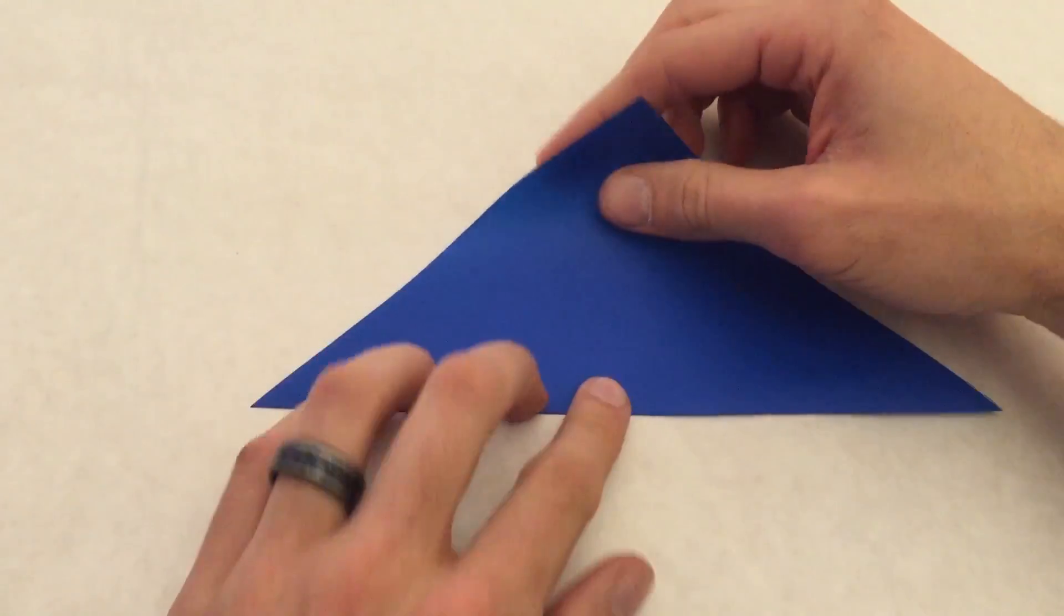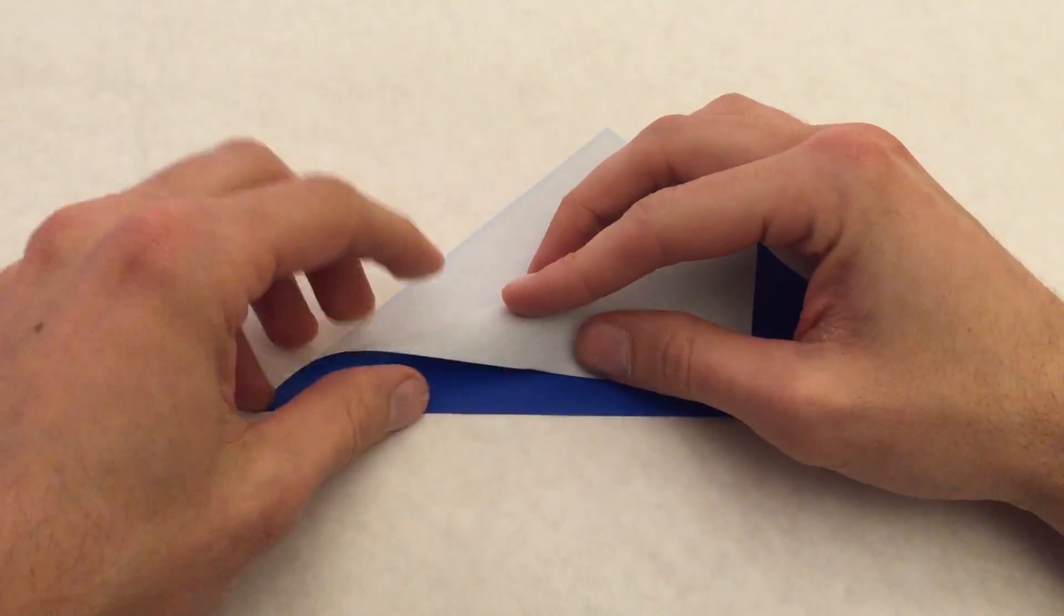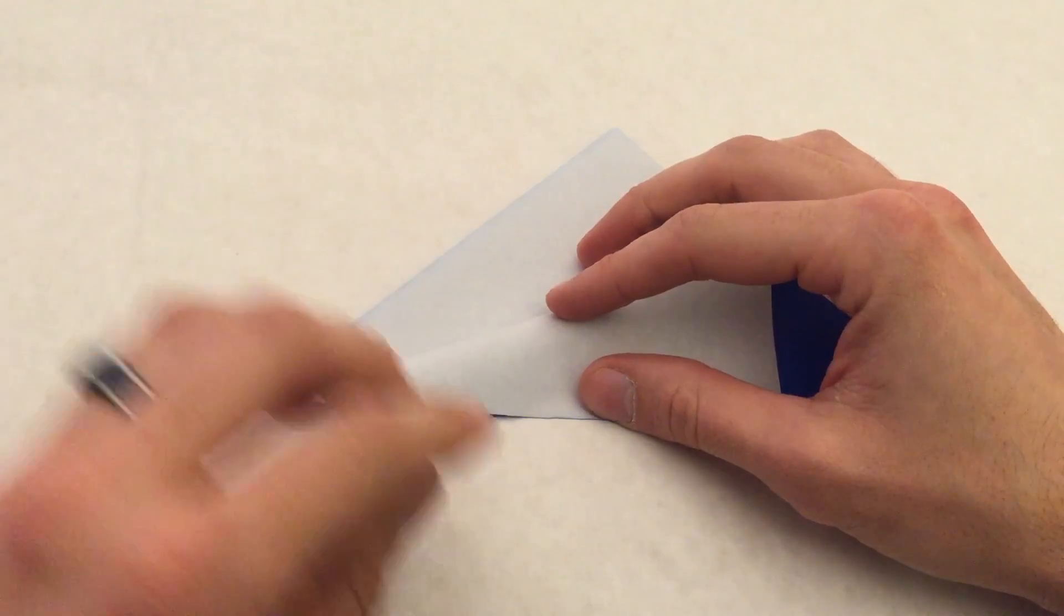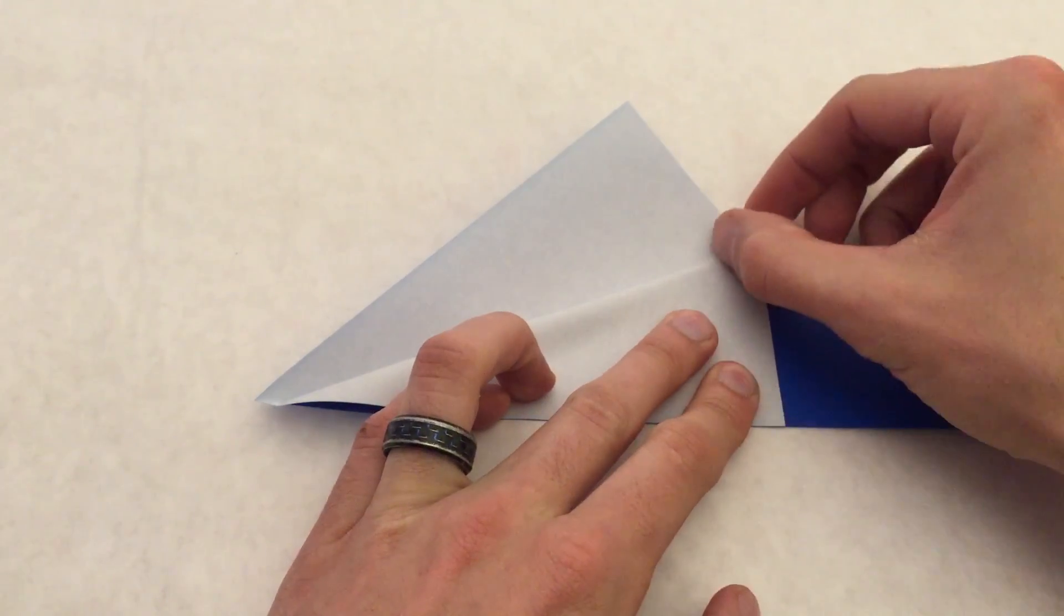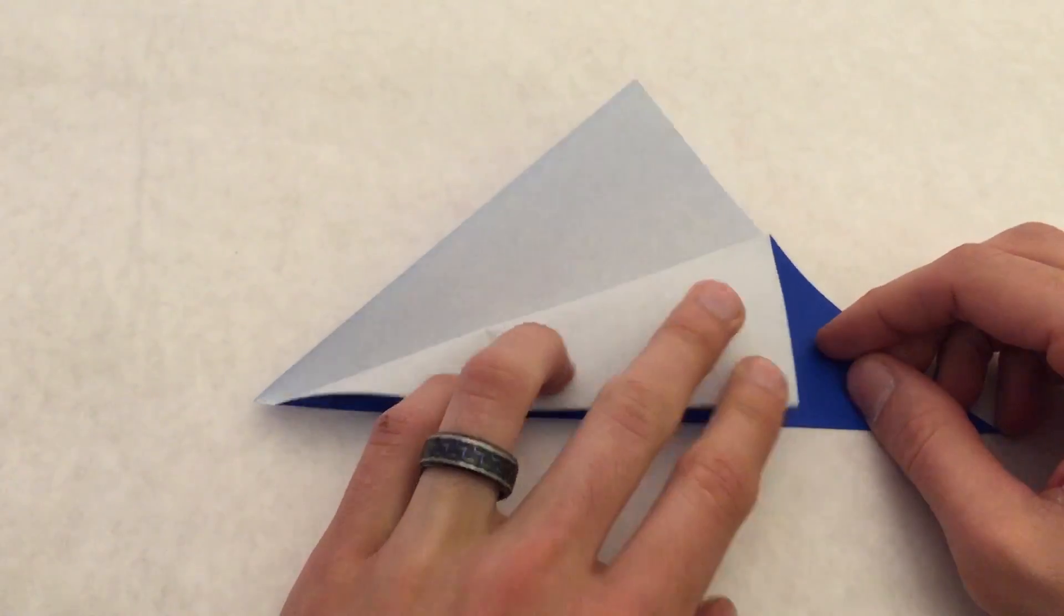Now we're going to take one layer and we're just going to be making a pinch, but we'll take this edge and line it up with this edge down here. Don't fold all the way, just come to this little point right here and make a pinch mark right there and then unfold.